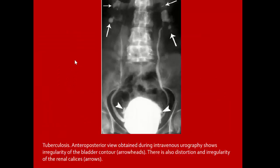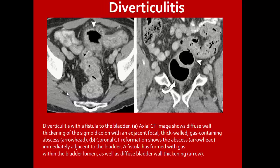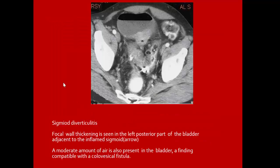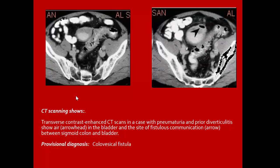TB IVP radiograph shows irregularity of the bladder with distortion and irregularity of the renal calyces. Diverticulitis with fistula to the bladder: also one cause of gas in the bladder and cystitis. CT shows diffuse wall thickening of sigmoid colon with adjacent focal thick-walled gas-containing abscess, coronal CT shows abscess immediately adjacent to the bladder, fistula forming with gas within the bladder lumen, sigmoid diverticulitis with focal thickening of the thin posterior part of the bladder adjacent to inflamed sigmoid, moderate amount of air present in the bladder compatible with colovesical fistula.